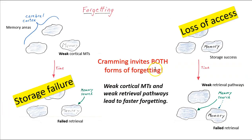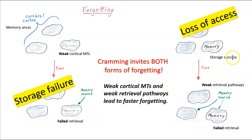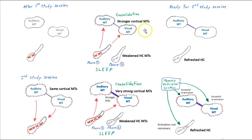Cramming invites both forms of forgetting. We're not spending much time building strong memory traces, so we'll have storage failure that can lead to forgetting over time. And we're not practicing retrieving that information, so we'll quickly lose access to those weak memory traces we did form. Understanding a bit about the brain sheds light on good study practices, and now we can understand why certain study practices are recommended by psychologists.